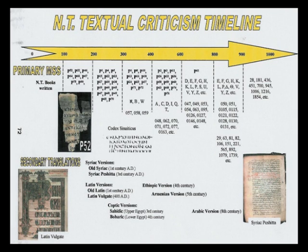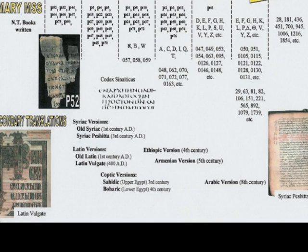Some major translations are listed here. The Latin versions — the Old Latin was translated very early, and then Jerome came and did a retranslation into the Latin Vulgate around 400 A.D., a key one that textual critics use. You also have other languages: Syriac, Coptic, Ethiopian, Armenian, and Arabic versions of the Bible translated fairly early. These translations are also used when scholars look at the text.